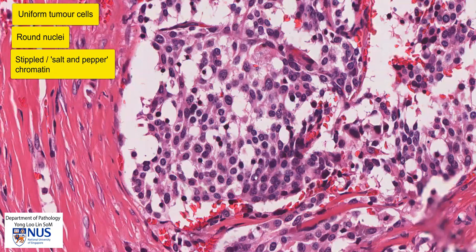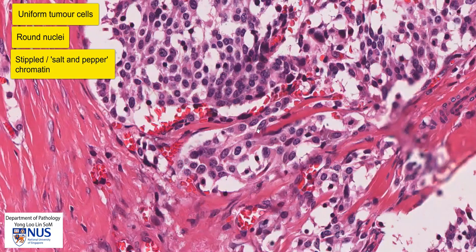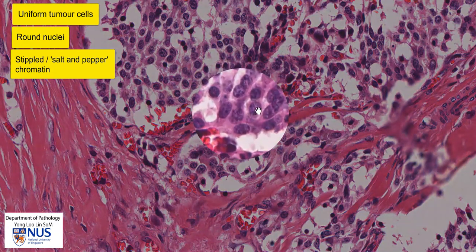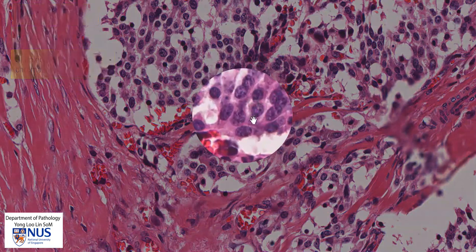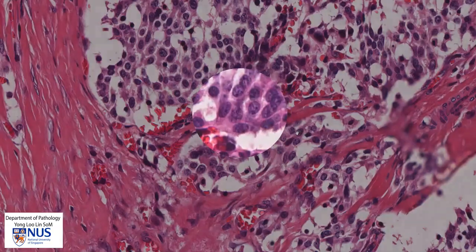The pepper represents the coarser granules and the salt represents the finer granules. We can appreciate this granular appearance very nicely here, and this is the classical appearance of neuroendocrine tumors.